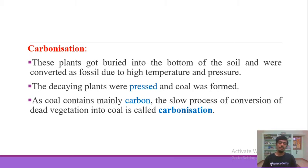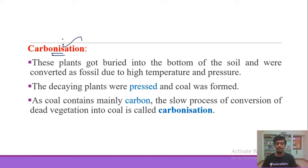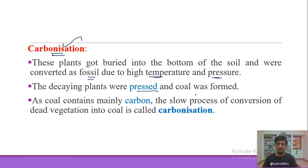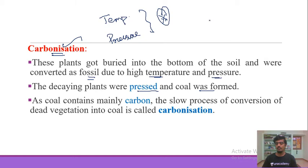The first important process is carbonization. Dead and decaying plants undergo this process over millions of years. They got buried at the bottom of the soil and were converted into fossils due to high pressure and temperature. The decaying plants were pressed and coal was formed. Temperature, pressure, and the absence of air are key factors in the process of fossilization.